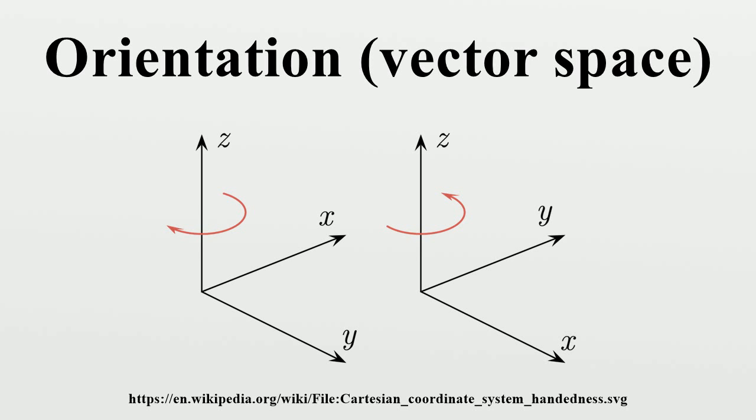If V is non-zero, there are precisely two equivalence classes determined by this relation. An orientation on V is an assignment of plus one to one equivalence class and minus one to the other.